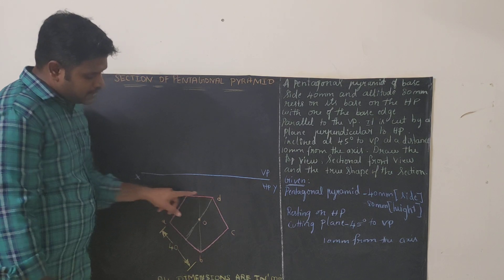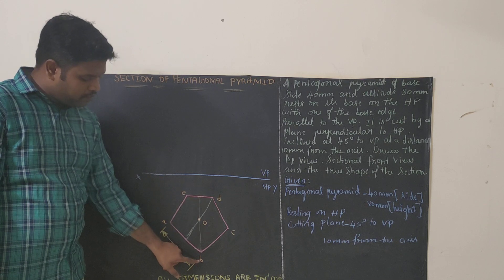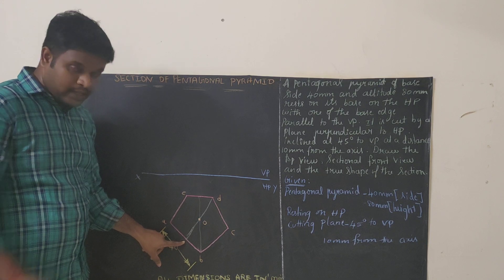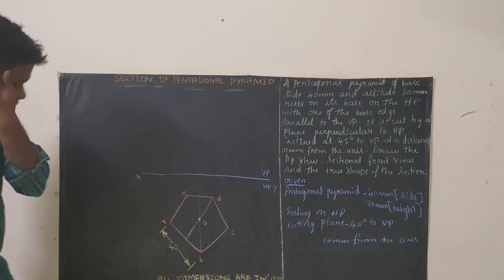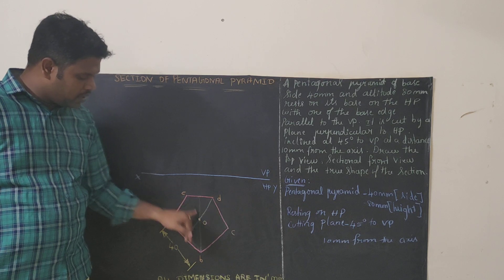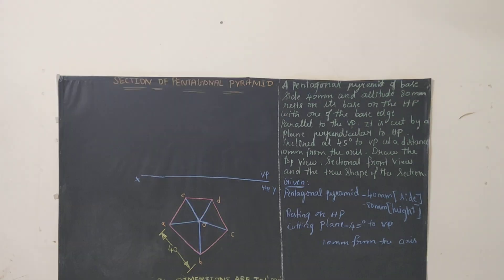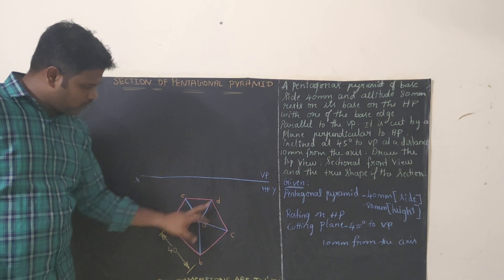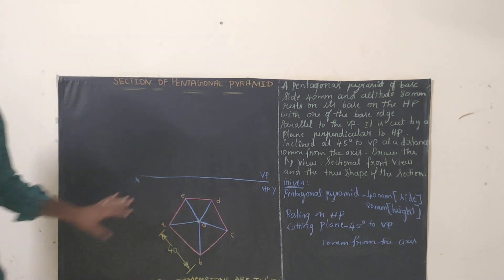To find the center O: bisect edge ED at 20 mm and join to the opposite corner B. Then bisect edge AB at 20 mm and join to the opposite corner D. These two lines intersect at one point — that point is O. Now join O to A, B, C, D, and E. These are the slant edges. For the pentagonal pyramid, you have to give references for all slant edges. As of now we have drawn the top view.